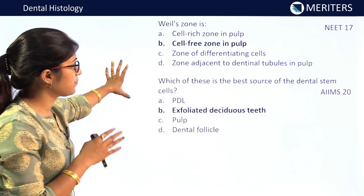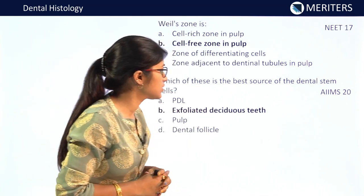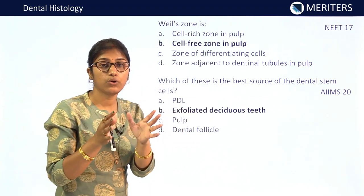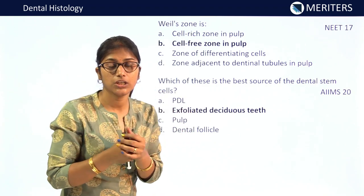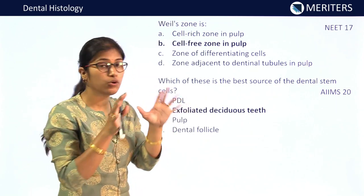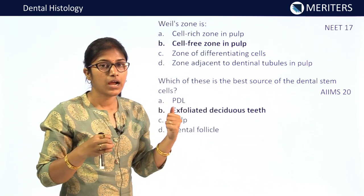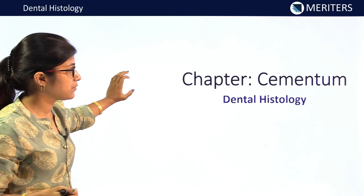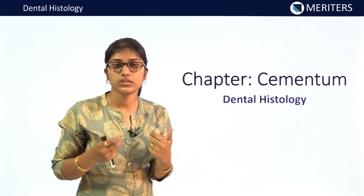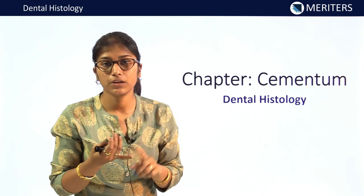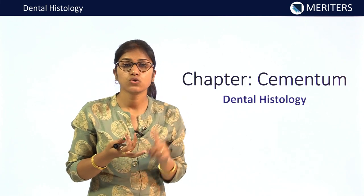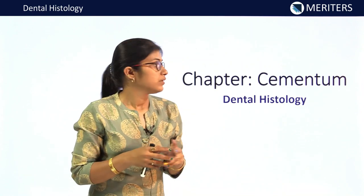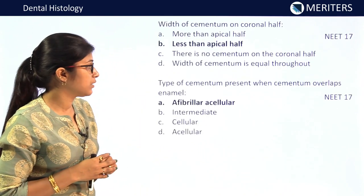Which is the best source of dental stem cells? Exfoliated deciduous teeth — appeared in NEET 2020. There is a very good diagram in Wheeler's book showing locations of various stem cells — you should be thorough with that. To summarize pulp: fibers, nerve fibers, collagen fibers, zones of pulp, and functions were asked. Now we'll start cementum.